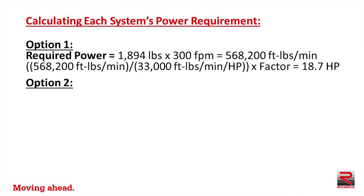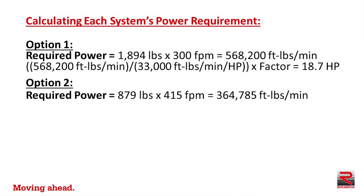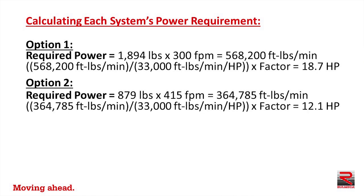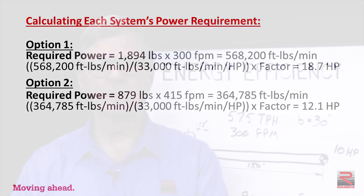Option two's required power equals a belt pull of 879 pounds times a belt speed of 415 feet per minute, for a power requirement of 364,785 foot pounds per minute. We divide that by 33,000 foot pounds per minute per horsepower, apply a factor, and determine that the required power equals 12.1 horsepower.